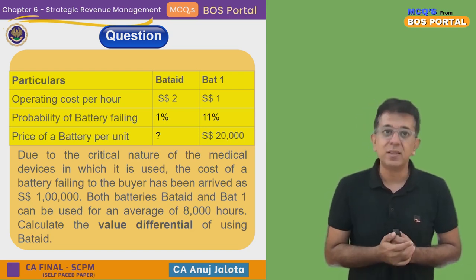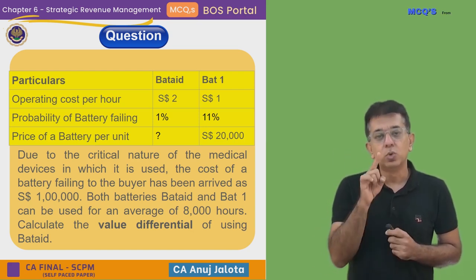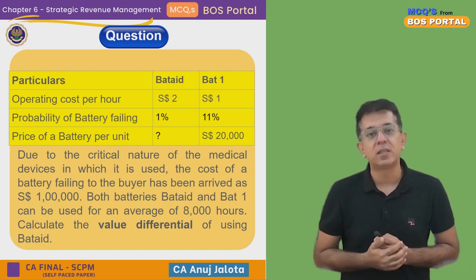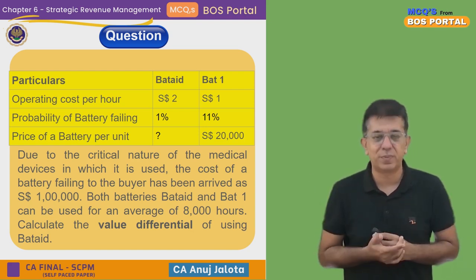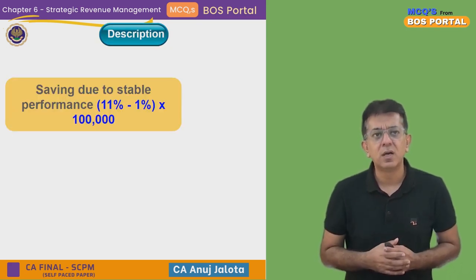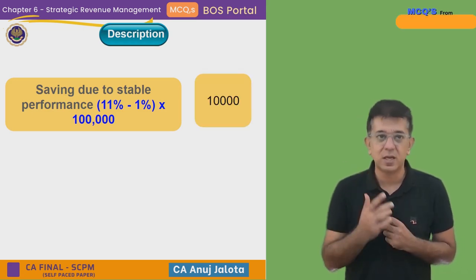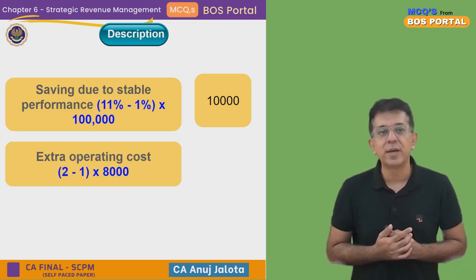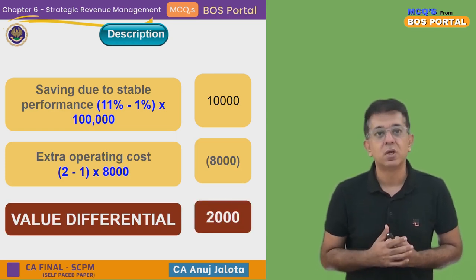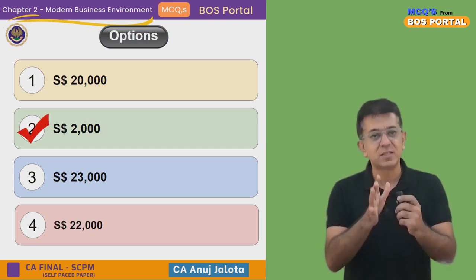But there is also a disadvantage: the operating cost per hour of Batad is higher — two rupees minus one rupee = one rupee extra per hour. Over eight thousand hours, that is eight thousand rupees of extra cost. So the value differential = savings due to more stable performance (10,000) minus extra operating cost (8,000) = two thousand rupees. Therefore, the correct answer is option two: two thousand rupees.